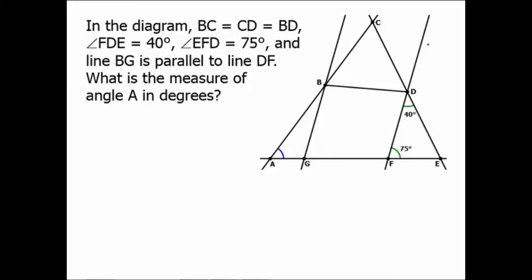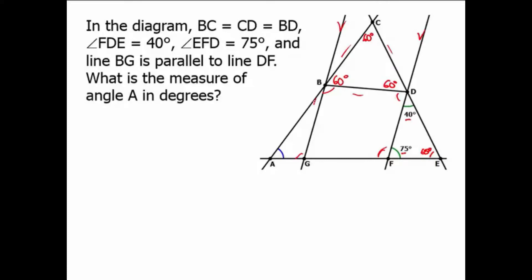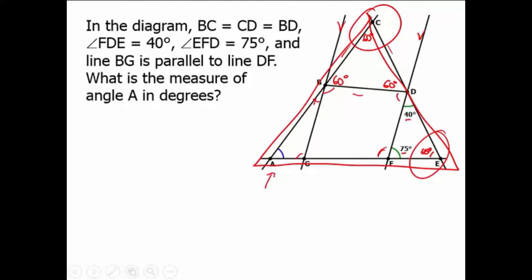Starting with a 40-degree and a 75-degree angle, we subtract from 180 to get 65 degrees for the third angle of the outer triangle. We know BC equals CD equals BD, so that must be an equilateral triangle where every angle is 60 degrees. Looking at the really big triangle, the sum of three angles must be 180. We have a 60-degree angle and a 65-degree angle, so 180 minus 60 minus 65 gives angle A equals 55 degrees.